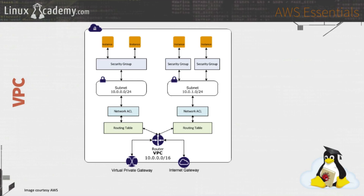Security in our virtual private cloud has two different layers of security. We have our network access control lists — for network administrators that probably sounds familiar — and then we have our security group that sits in front of our EC2 instances or RDS instances. We can manage security at the security group level, but we also have essentially a firewall at our network level, also known as our network ACL.